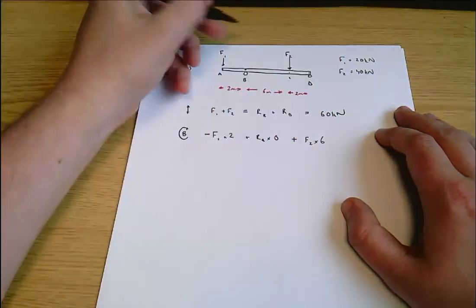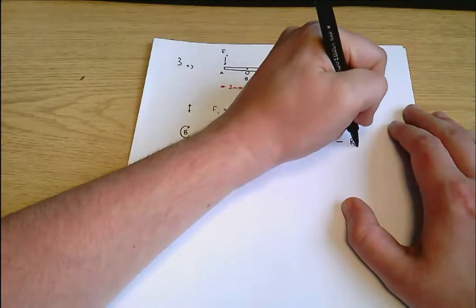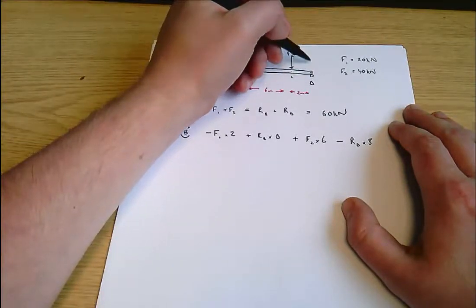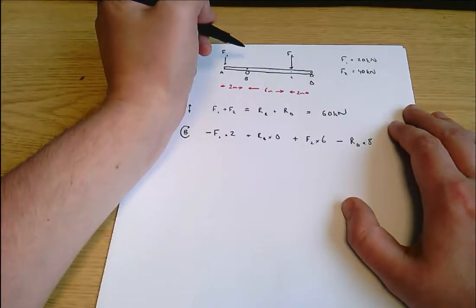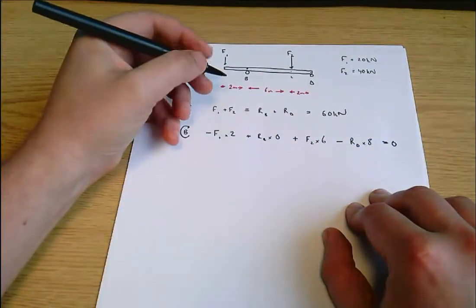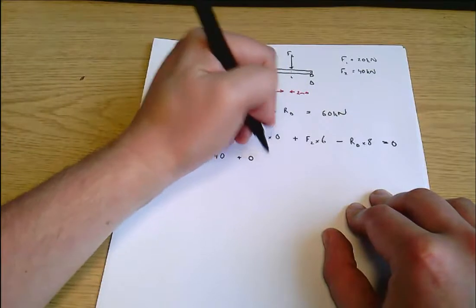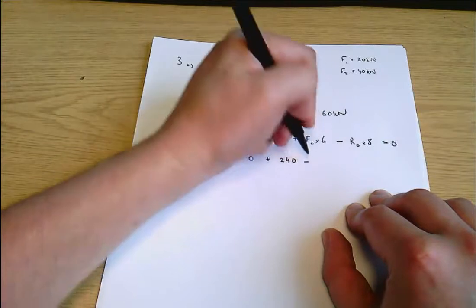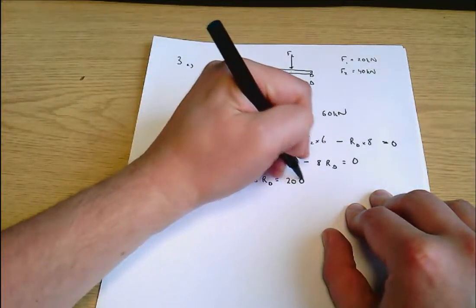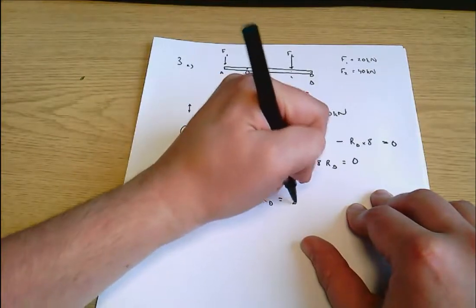The force at B acts straight through the point here, so it's not going to create any moment. Plus F2 times six, so this force F2 acts six meters away, minus RD times eight. The reaction here at D is eight meters away, pushing upwards, so it's tending to turn things anti-clockwise. As long as I keep all my anti-clockwise moments negative and all my clockwise moments positive, that should all sum to zero. Putting in numbers, that is minus 40 plus zero plus 240 minus 8RD equals zero, which is the same as saying 8RD equals 200. So RD equals 25 kilonewtons.